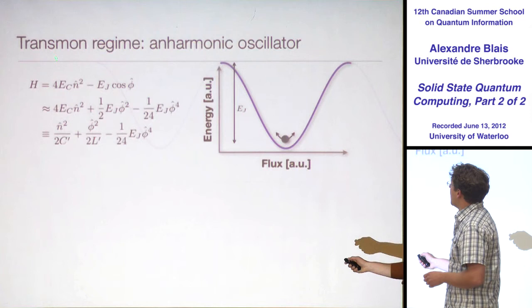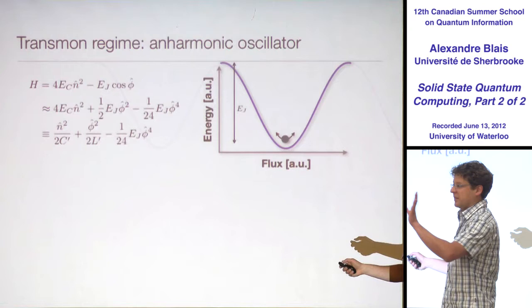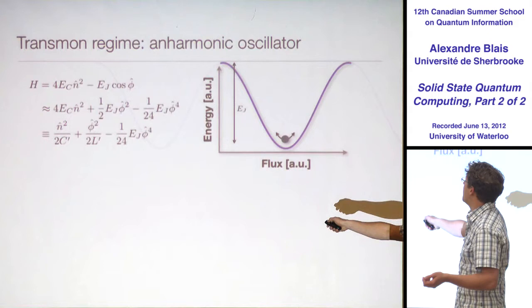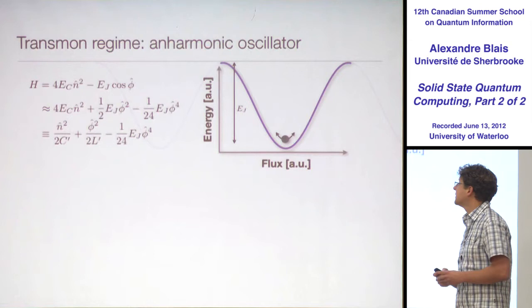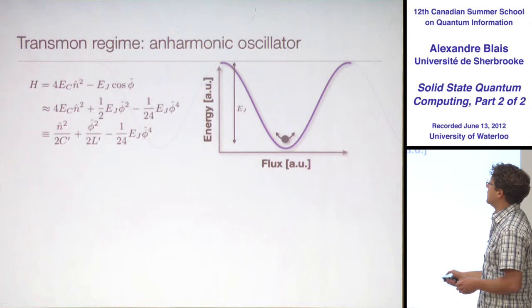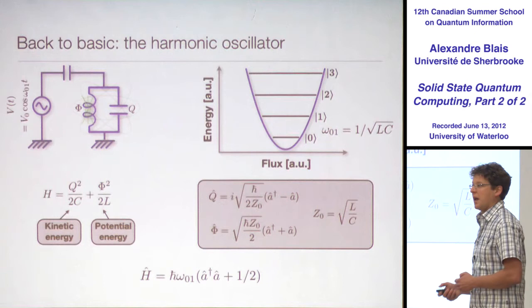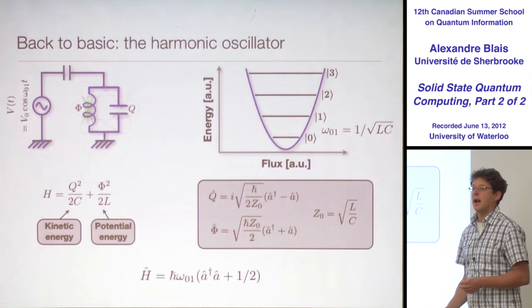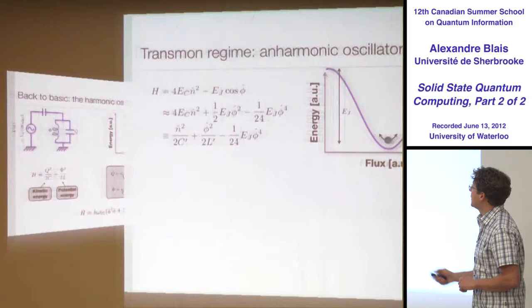Just so it really looks like a harmonic oscillator, I'll introduce C-prime and L-prime — that's not really necessary, it's just to look like what you've seen before. So instead of writing 4EC N-squared, I'll write this as N-squared over 2C-prime and phi-squared over 2L-prime. L-prime is just the Josephson inductance. I do that because you know exactly how to deal with this — by introducing creation and annihilation operators with this Z-naught, which is sqrt(L/LC), we had diagonalized the Hamiltonian.